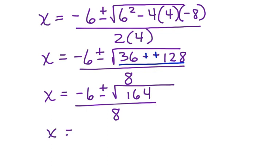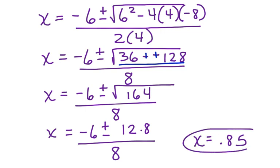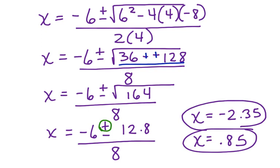The square root of 164 is equal to 12.8, and we divide that whole thing by 8. When we do this, we end up with x equals 0.85 for one of our equations and x equals negative 2.35 for our other equation. Remember, we have two answers because there is a plus and a minus. This is our answer, and our work is complete.